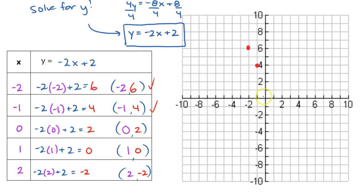Next one, 0, 2. So we don't move left or right this time. This time, we're just going to move up 2 so that we can plot the point 0, 2. The next one, 1, 0. This time, we move right 1, and we do not move up or down. So we're right here, right on the x-axis. And the last point, 2, negative 2, means you're going to go right 2 and then down 2.